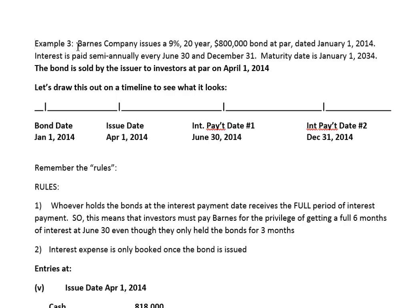We're going to our third example here. We're back to our good old company Barnes, and they issued a 9% 20-year bond, $800,000 par, and it's dated January 1, 2014.